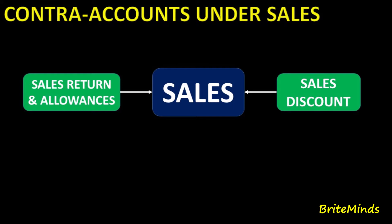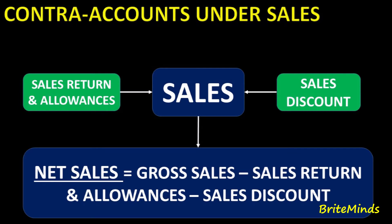If the buyer takes advantage of the discount and pays within the 10-day discount period, accounting practice does not deduct the discount from sales; rather, it uses the contra account called Sales Discount. Only the net sales is reported on the Statement of Comprehensive Income. Net sales is the sum of a company's gross sales minus its returns, allowances, and discounts. The formula is: Net Sales = Gross Sales − Sales Returns and Allowances − Sales Discount.